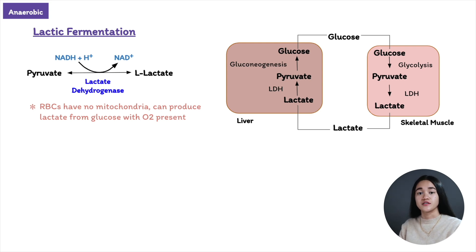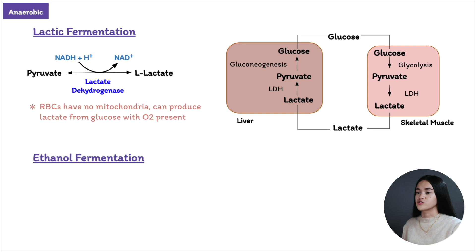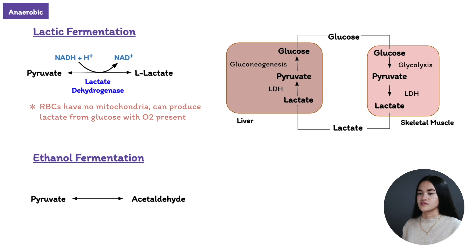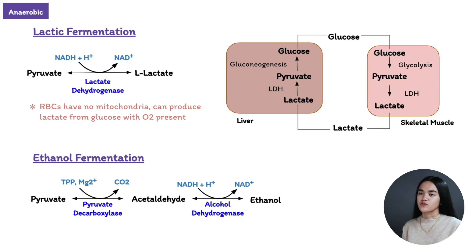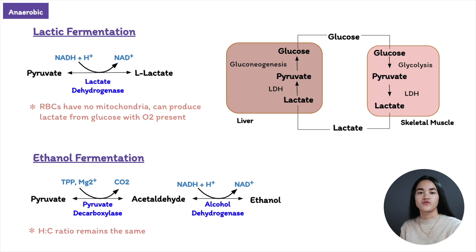The other type of fermentation is ethanol fermentation. This occurs in yeast and other microorganisms where pyruvate is converted to ethanol and carbon dioxide rather than lactate, and it is a two-step process. In the first step, pyruvate is decarboxylated by pyruvate decarboxylase, which requires magnesium and has a tightly bound coenzyme thiamine pyrophosphate, derived from vitamin B1. In the second step, acetaldehyde is reduced to ethanol by alcohol dehydrogenase. In all fermentations, the hydrogen-to-carbon ratio of the reactants and products remains the same.